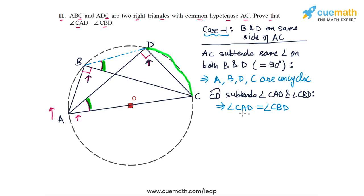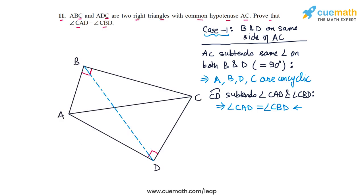Now let's consider Case 2, where B and D are on opposite sides of AC. Here is a figure for Case 2, showing B and D, the right-angled vertices, on opposite sides of the hypotenuse AC, with B and D joined. We again need to show that ABCD is cyclic so that the equality of angles CAD and CBD will follow.